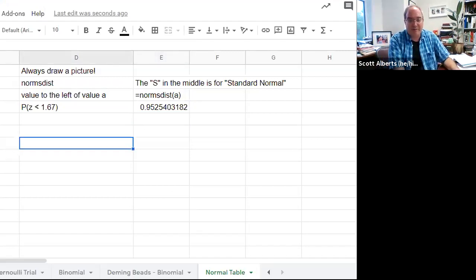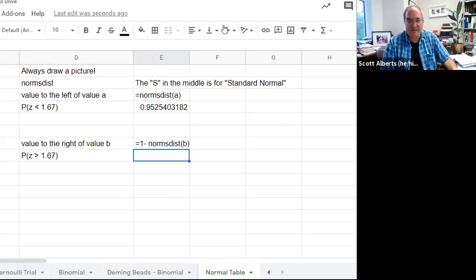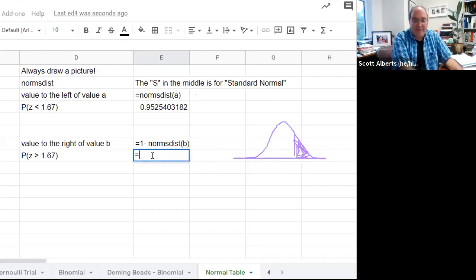If we wanted to go the other direction and I said, what's the probability that the value is to the right? We just take one minus that. If I said, what's the probability it's greater than 1.67? Then I draw my chart again, 1.67 above the mean, and we want to go to the right of that. That's the probability that it's greater than 1.67. It's just 1 minus that same calculation we did before. There's not a second command to go greater than or less than, you just do 1 minus that.